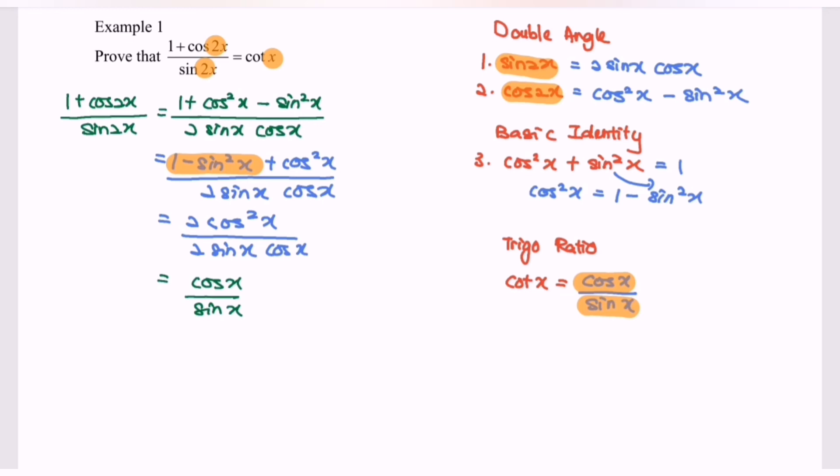So finally, 1 plus cos 2x over sin 2x is equal to cotangent x. Now we have proved that.